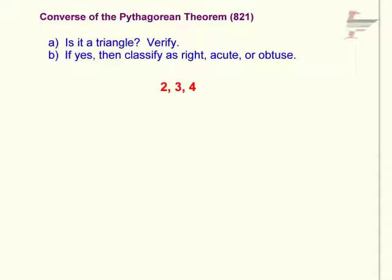Welcome geometry students to chapter 8. This is the converse of the Pythagorean Theorem. We're going to try an example where the three sides of the triangle are 2, 3, and 4. So please have your paper and pencil ready and follow along with me. We're going to do two parts.